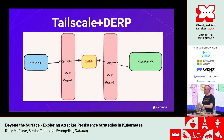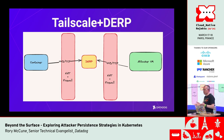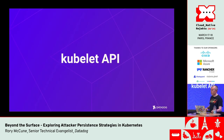So we have our container running and our persistent access established. But we're missing something — the admin's credentials are going to expire in 15 minutes, and we haven't got any replacement creds. We need credentials because otherwise we can't use the Kubernetes API. How can we get creds and find a way to access Kubernetes functionality without being spotted?